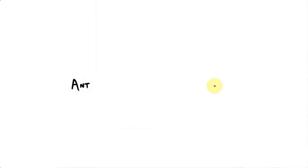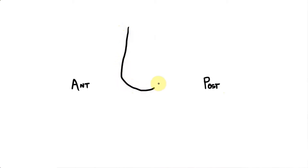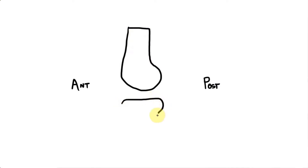First I'm going to draw the knee in the anatomical position. I have the anterior aspect here, the posterior aspect here, and I'll be drawing a lateral view of the joint. First I'll add the bones — the femur with its condyles here, and the flattened tibia below.